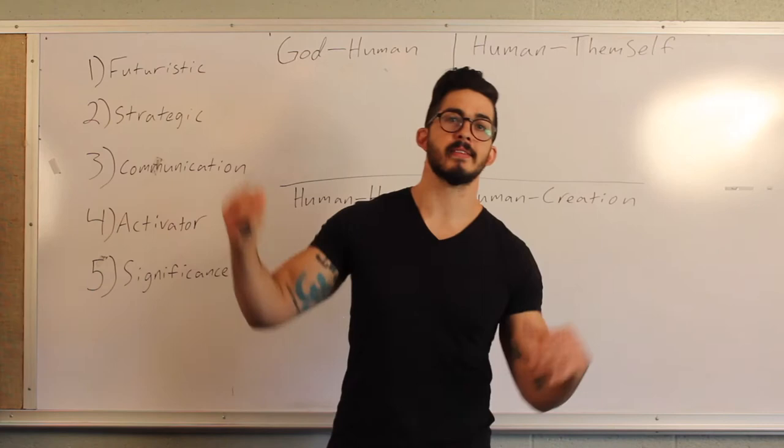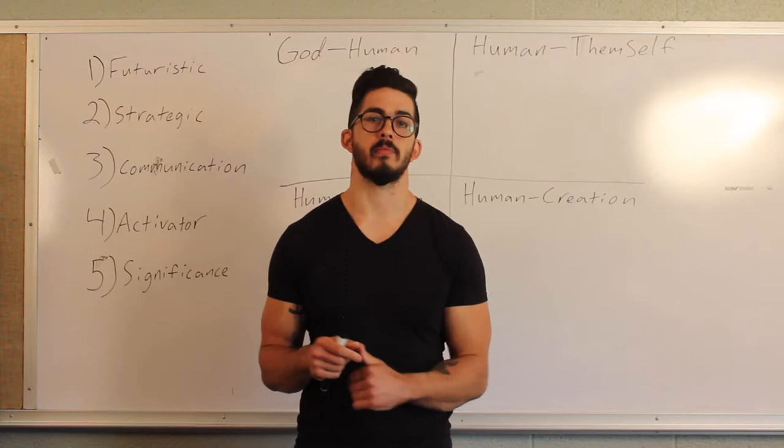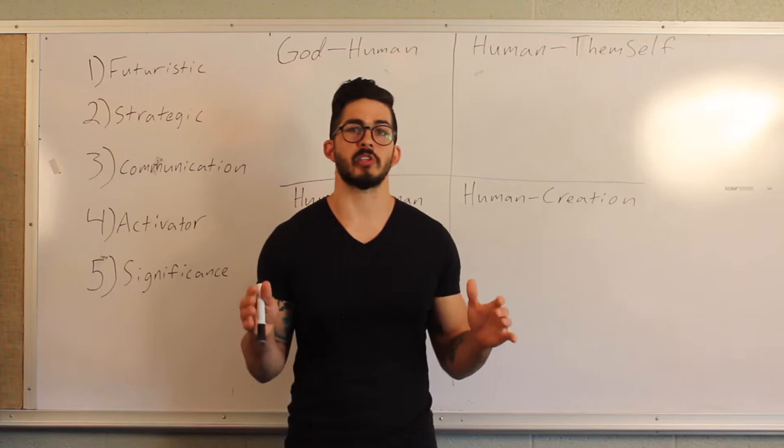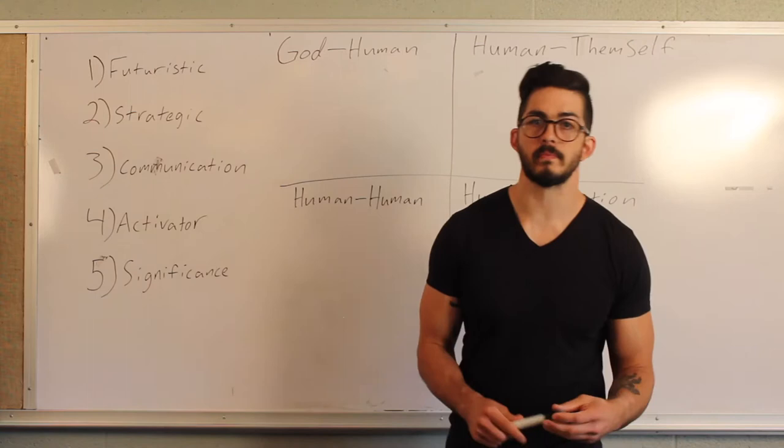The second relationship you see him create is between human and themselves. That can be summed up in this line where God looks at mankind alone and says, 'It's not good — they need community.' It's that internal voice we have, that internal dialogue, that internal life — how we make decisions, our thoughts, our feelings, our behaviors. We see that relationship between humans and themselves created in Genesis 1 and 2.